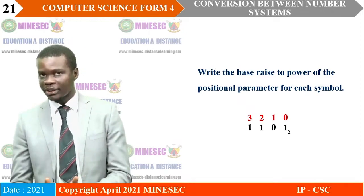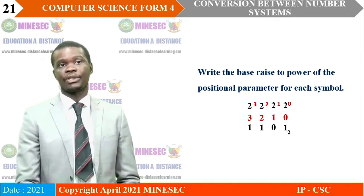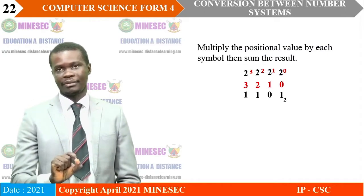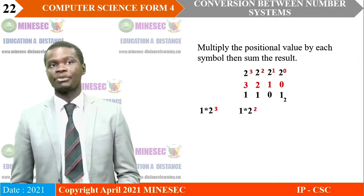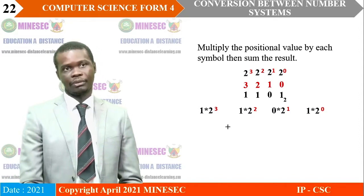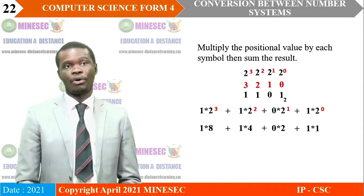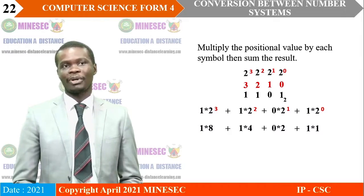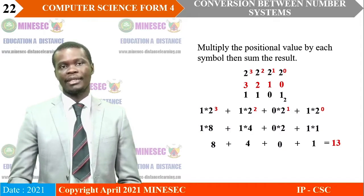2 to the 3 equals 8, 2 to the 2 is 4, 2 to the 1 is 2, and 2 to the 0 is 1. So we have 1 times 8 plus 1 times 4 plus 0 times 2 plus 1 times 1, giving us 8 plus 4 plus 0 plus 1, which equals 13. So the color code in decimal is 13.